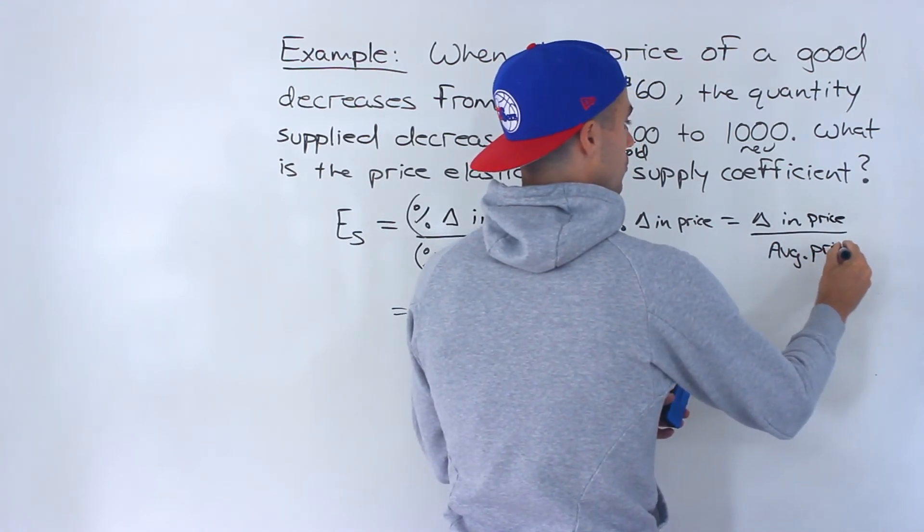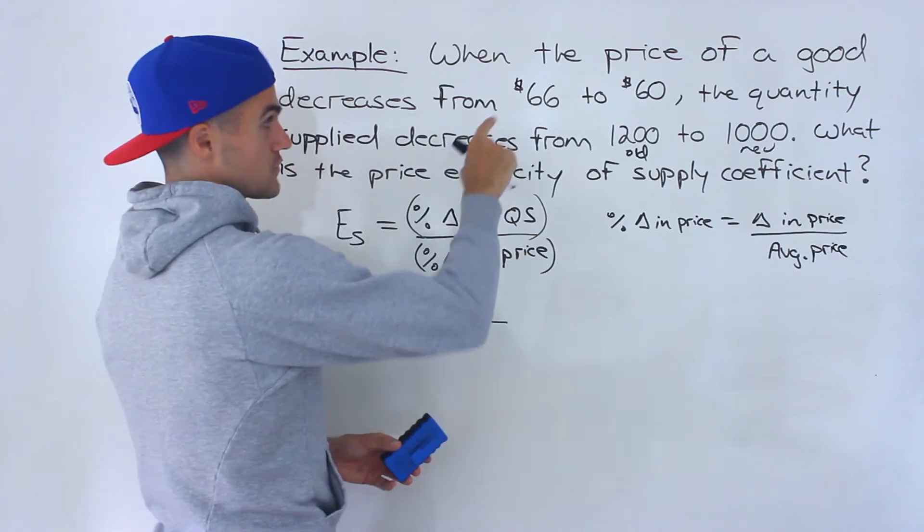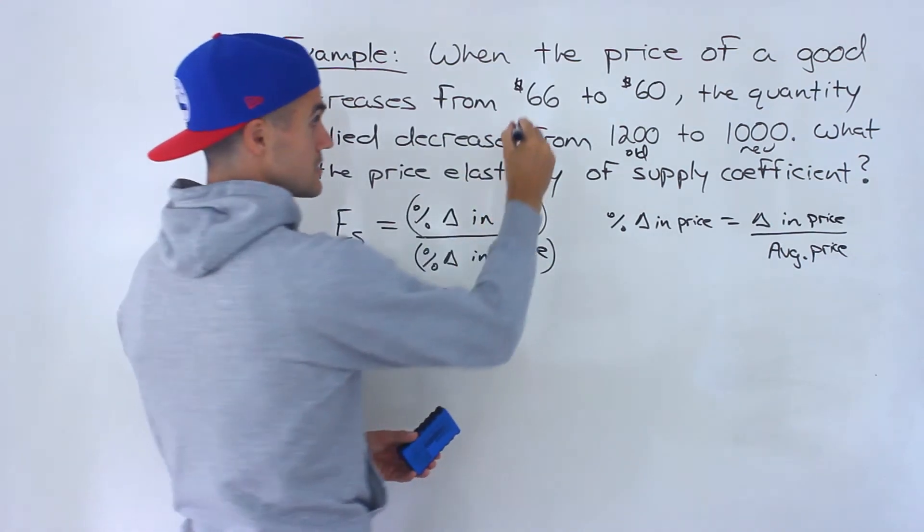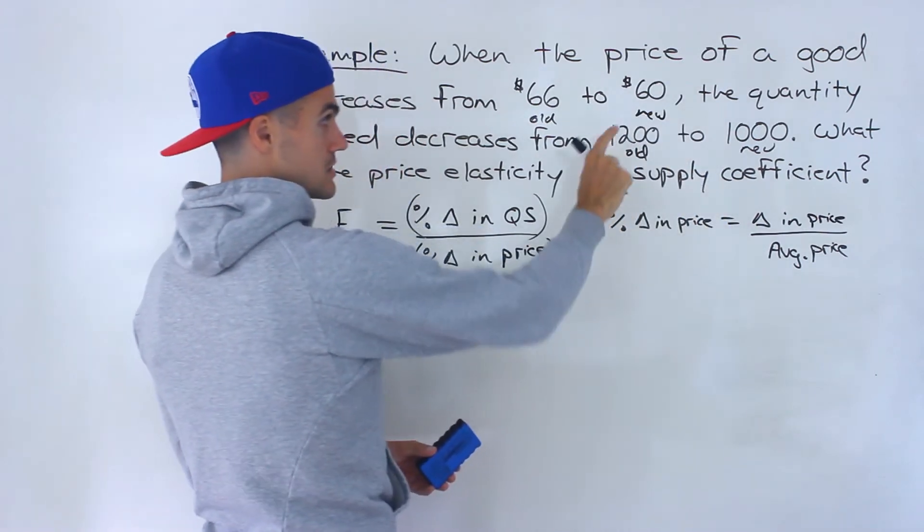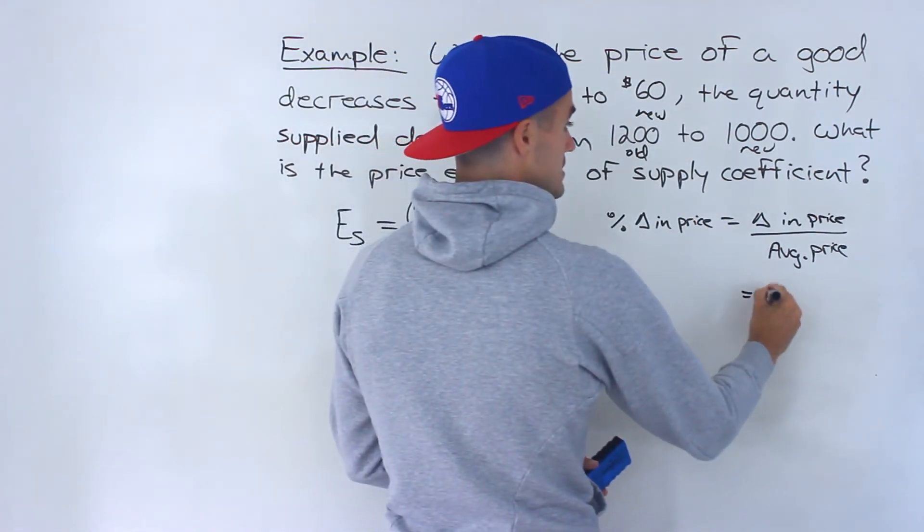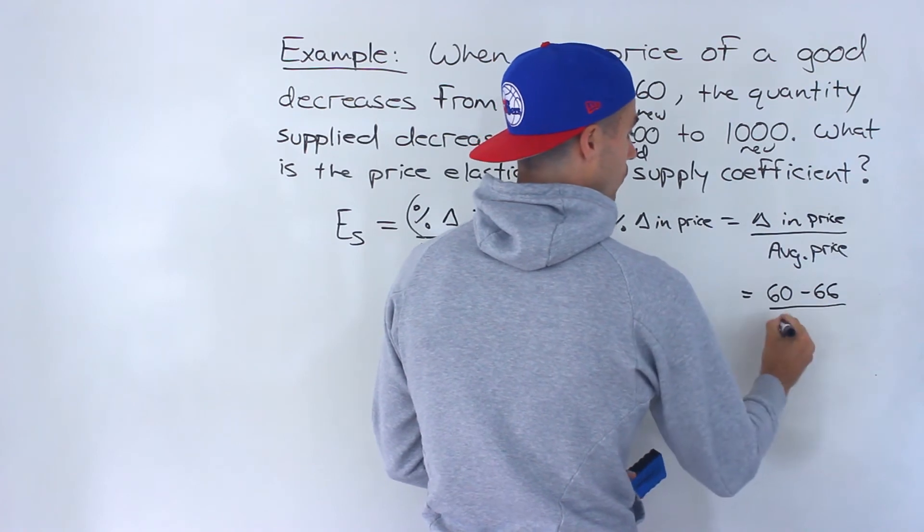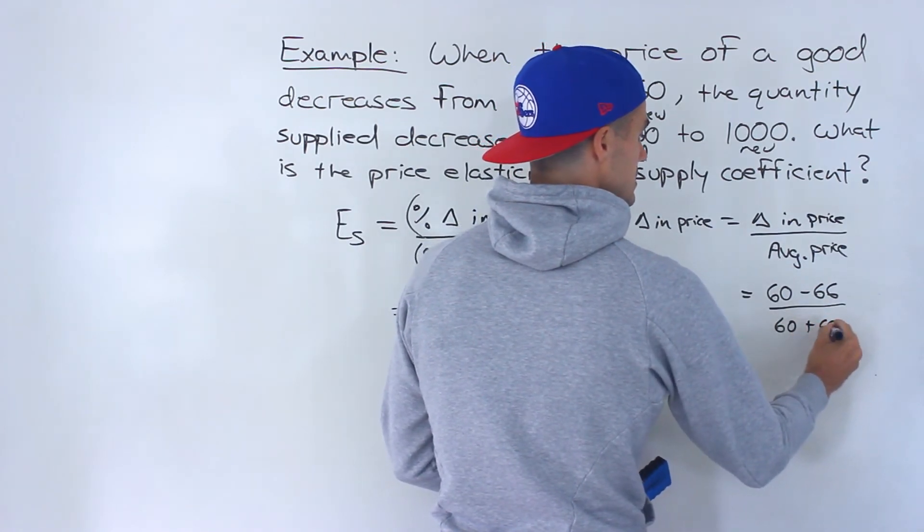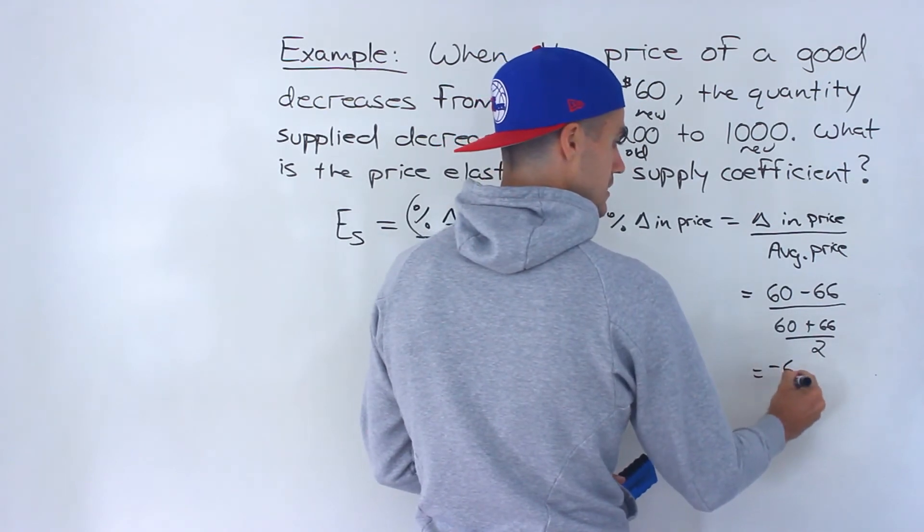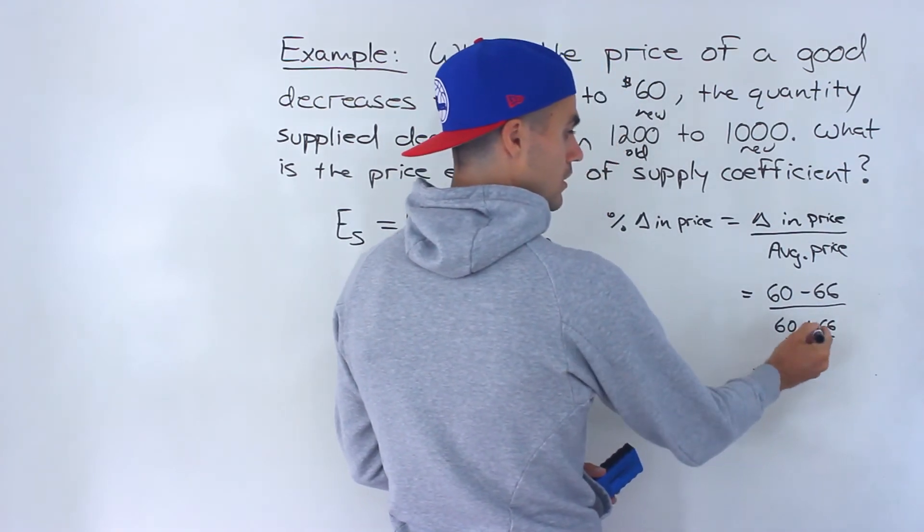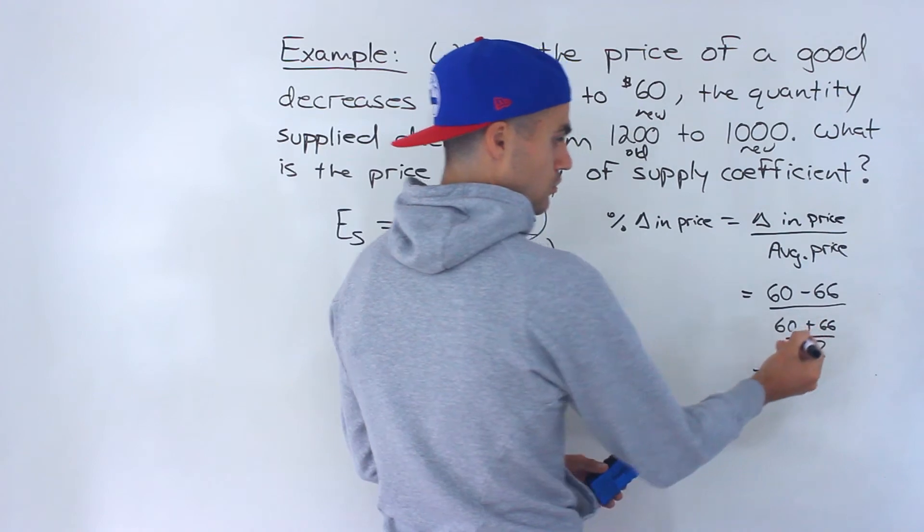And we're told that the price decreased from 66 to 60. So this was the old price, this is the new price. Change in price is new minus old. So we got 60 minus 66 over 60 plus 66 divided by 2. So we would end up being 63.